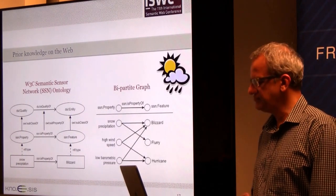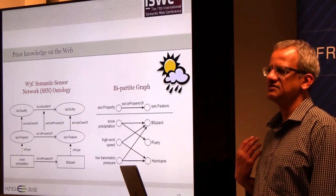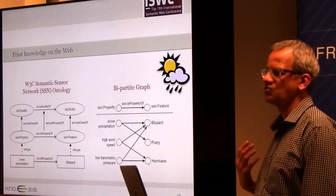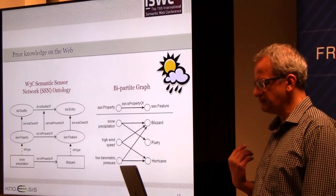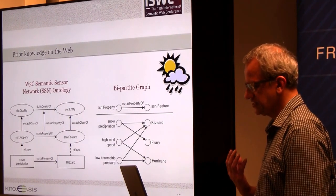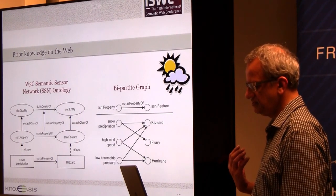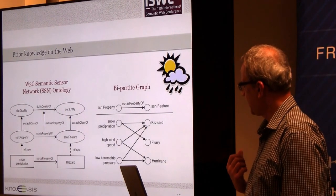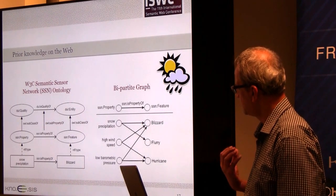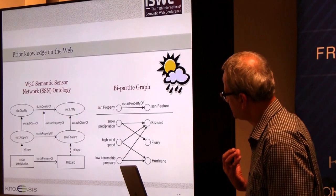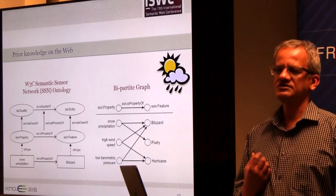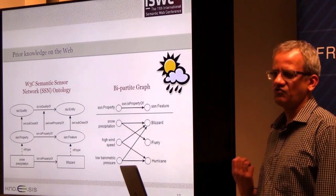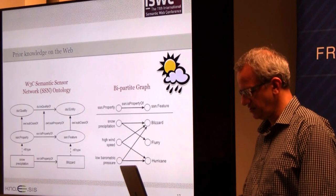This structure is not specific to the medical domain. You can encode similar information using the same structure in a totally different context. In the weather context, snow precipitation and high wind speed cause blizzard; low barometric pressure and high wind speed cause hurricane. Similar structure is shared by information in different domains, and we can benefit from that.